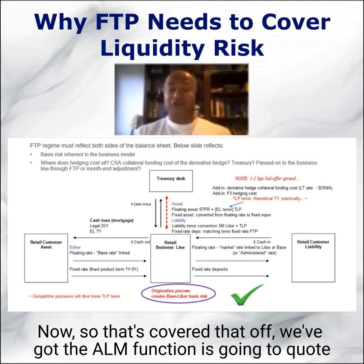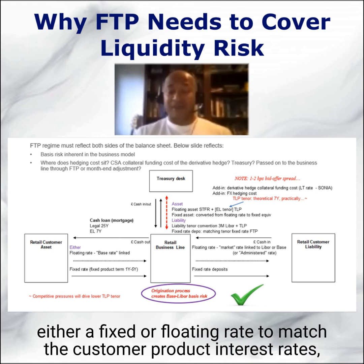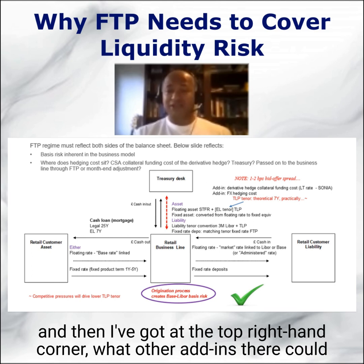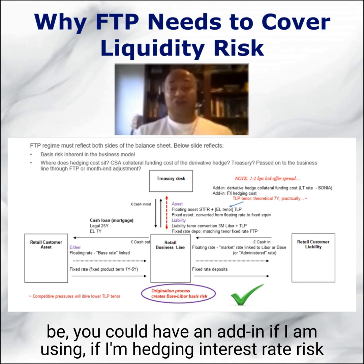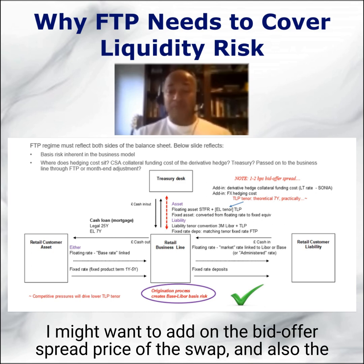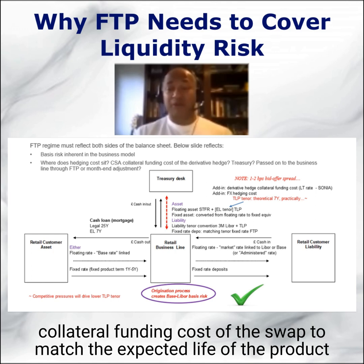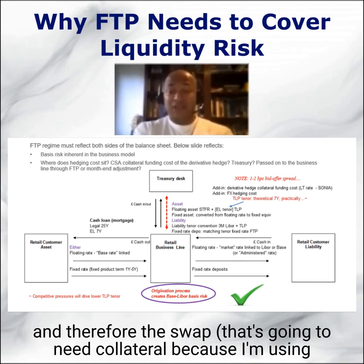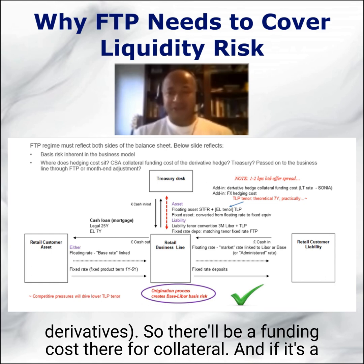The ALM function is going to quote either a fixed or a floating rate to match the customer product interest rate. At the top right-hand corner there are other add-ins there could be. You could have an add-in if you are hedging interest rate risk of a fixed rate product with the market externally with an interest rate swap — you might want to add on the bid-offer spread price of the swap and also the collateral funding cost of the swap to match the expected life of the product and therefore the swap. That's going to need collateral because you're using derivatives, so there'll be a funding cost there for collateral.